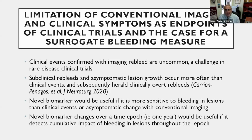Yet when we have a subclinical re-bleed in a lesion, it will lead to overt clinical re-bleeds. So it is important to try to detect through a biomarker these subclinical re-bleeds so that we can modify them to prevent more clinical events. A novel biomarker would be useful if it is more sensitive to bleeding in lesions than clinical events or imaging changes alone, and if it detects a cumulative impact of bleeding in lesions throughout a one-year epoch.